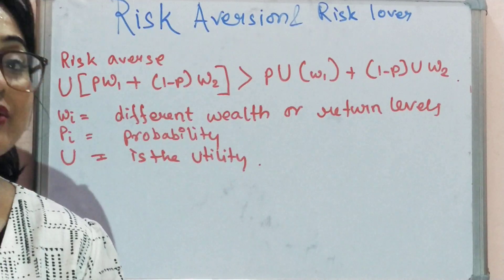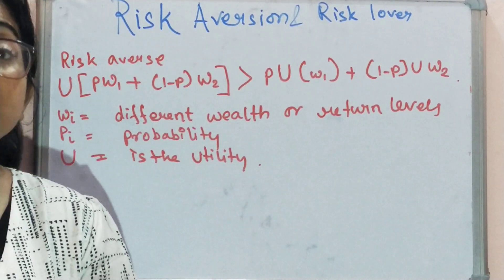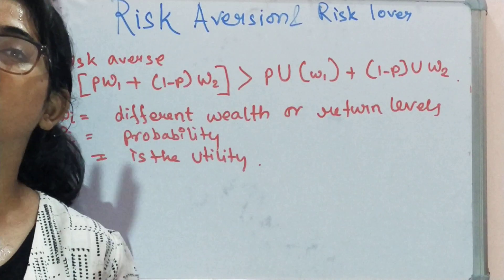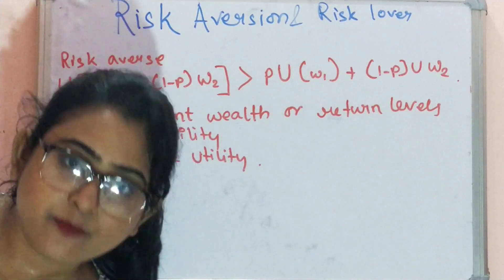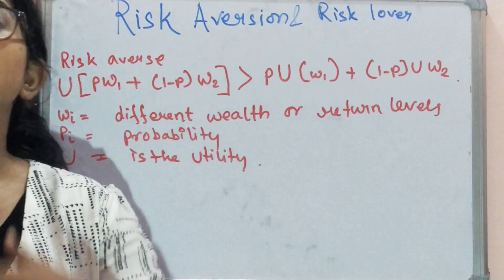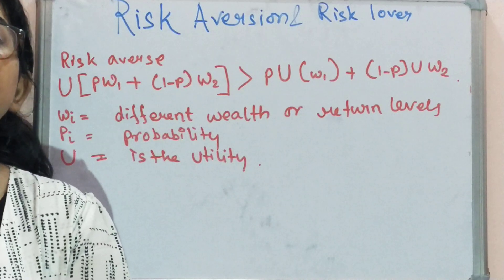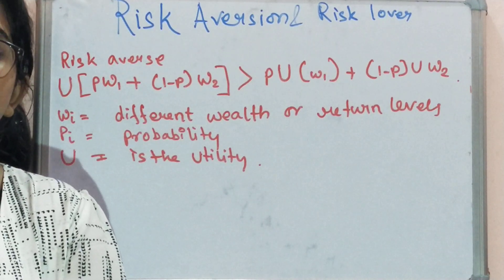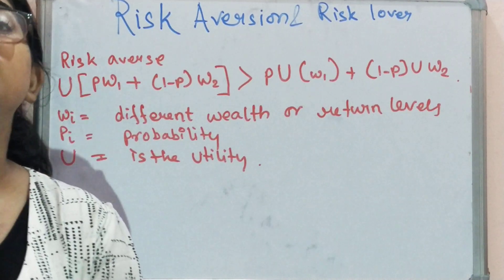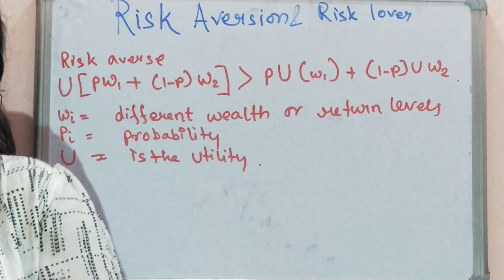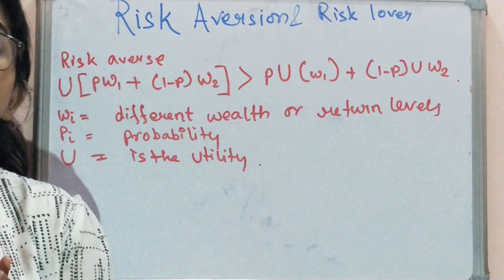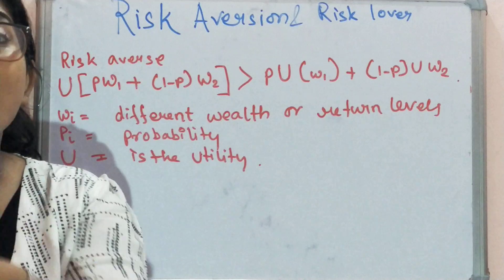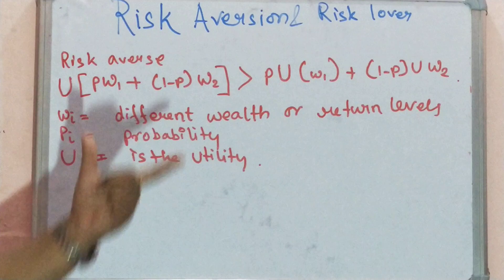Risk averse people are afraid of taking risk; risk lovers are willing to take risk. When you take a risk you get more in return. For example, if you invest in a mutual fund you will surely get one lakh ten thousand, but if you take a risk and keep the money for three long years you get four lakhs. So if you are a risk lover you will take the risk and get higher utility. If you are risk averse you won't take the risk, preferring the certain ten thousand extra. This is how we understand it through an equation.